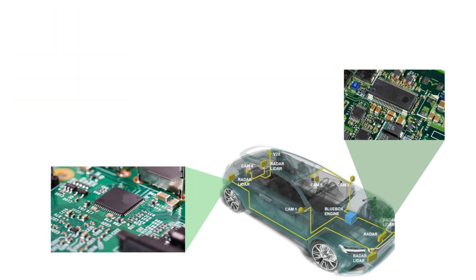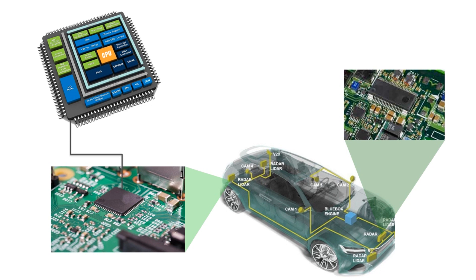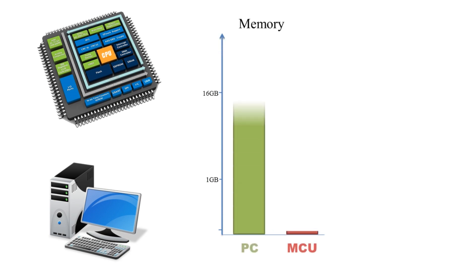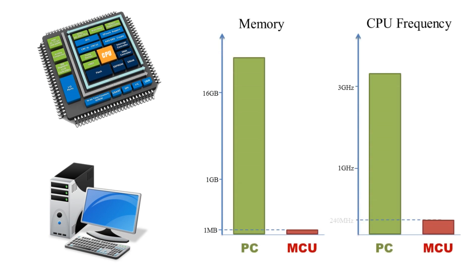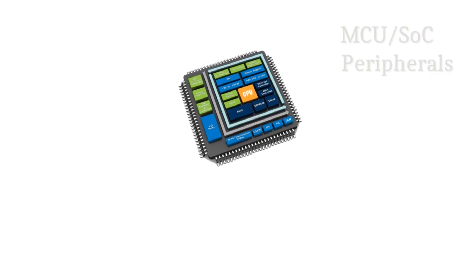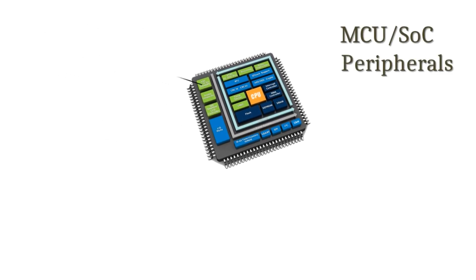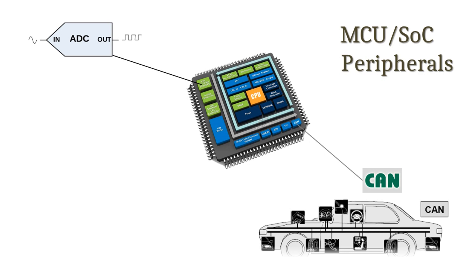Did you know this chip is a small computer on its own? It has a CPU and a number of peripheral modules. However, unlike a personal computer, these devices usually have less memory and smaller CPU frequency. Instead, they have peripheral modules that are missing in regular personal computers: ADC, CANBUS, GPIO and others.